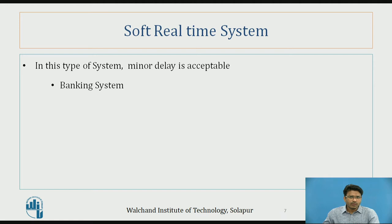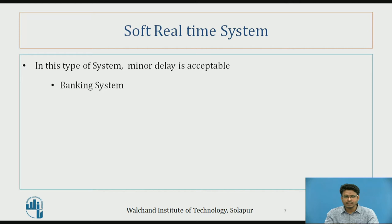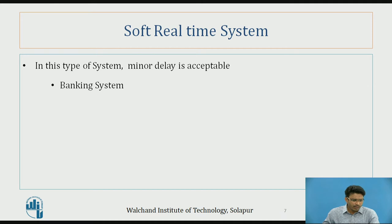In the soft real-time system, minor delays are allowed. For example, in a banking system, getting cash withdrawn may be delayed by a second or two — that doesn't matter. While transferring an amount from one account to another, it will take some time and the time will always vary between transactions. This minor delay is acceptable in the soft real-time system.